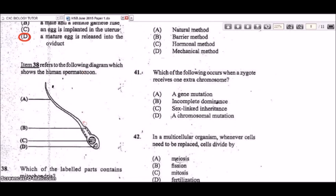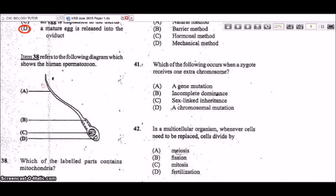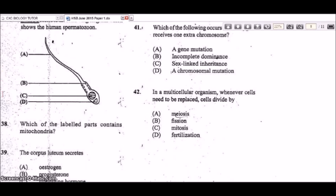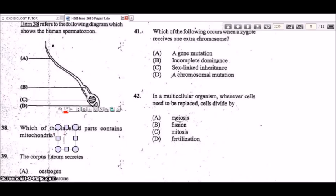Item 38 refers to a diagram of human spermatozoa. Which labeled part contains mitochondria? B is the midpiece region of the sperm, which contains mitochondria needed for producing energy so the sperm can swim rapidly.